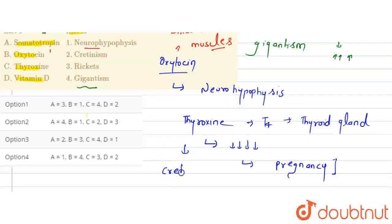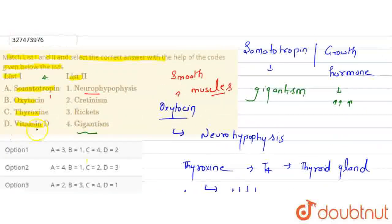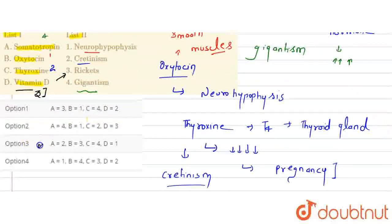So this is the correct second. Then vitamin D, which causes a disease that is rickets. So A for correct match will be the fourth. These three options: B for first, C for second, and D for third will be the second option.